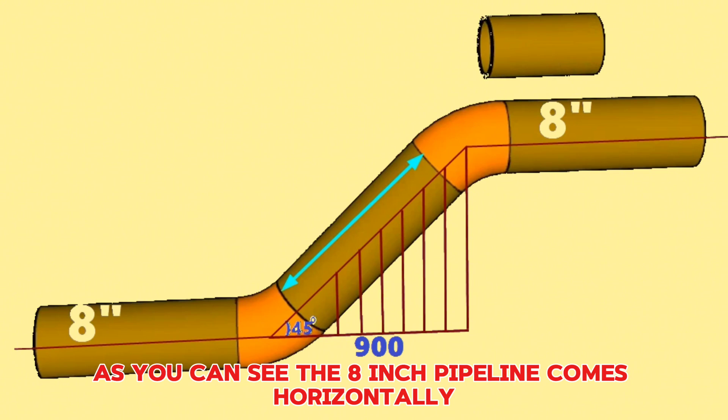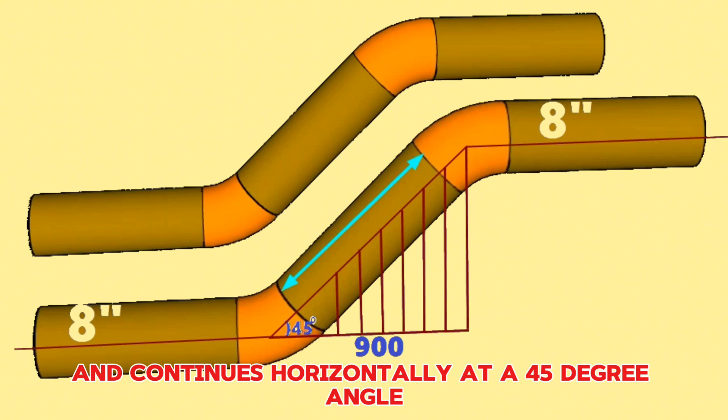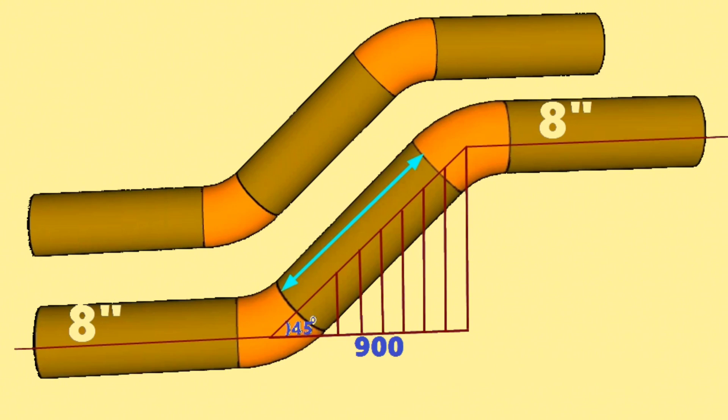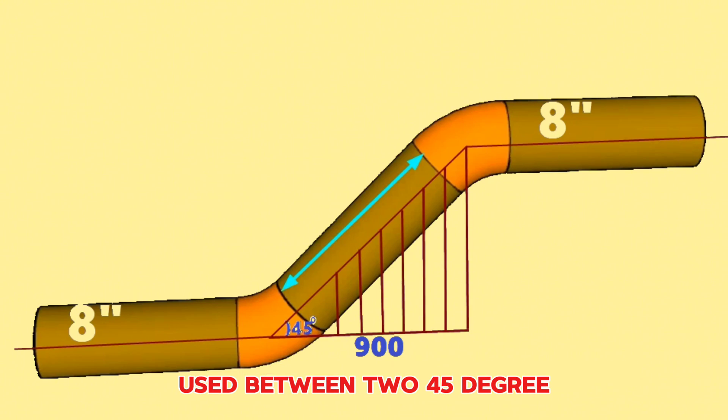As you can see, the 8-inch pipeline comes horizontally, then goes down at a 45-degree angle and continues horizontally. We are required to calculate the length of this piece of pipe used between two 45-degree butt weld elbows in this pipeline.